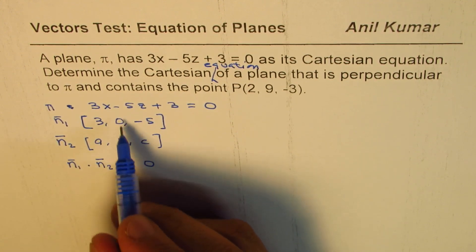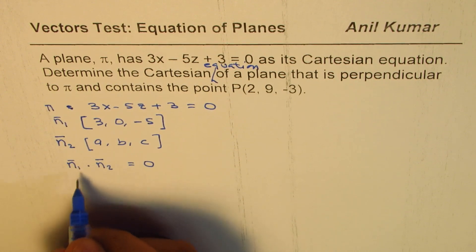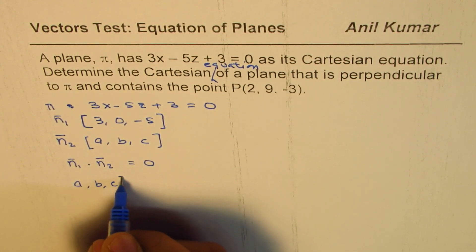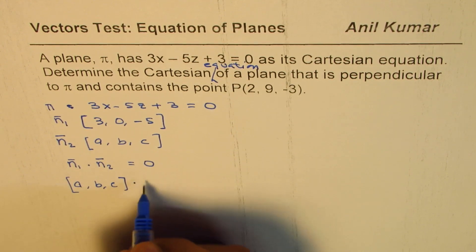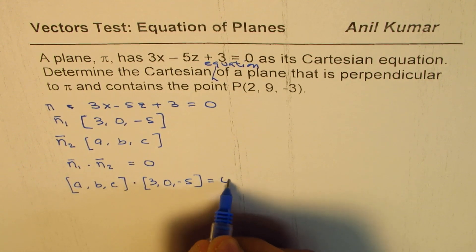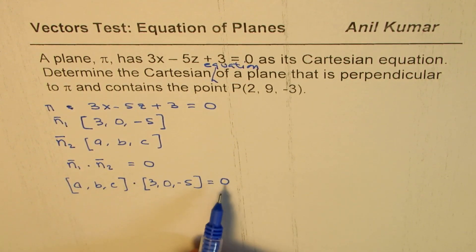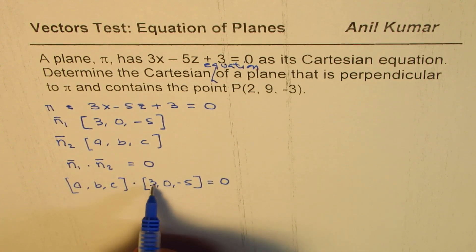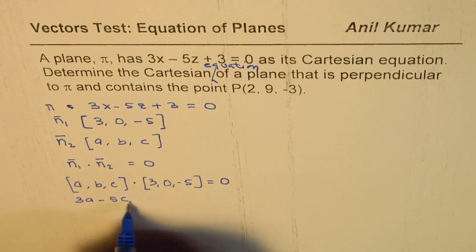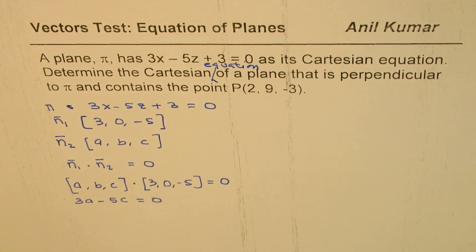We can actually find the dot product and then get the result. So [a, b, c] · [3, 0, -5] should equal zero. If you do this dot product we get 3a + 0 - 5c = 0.